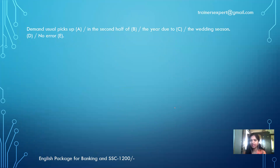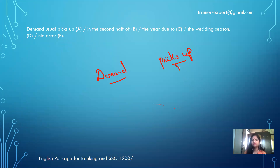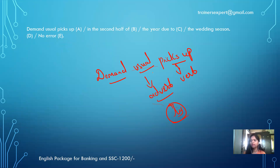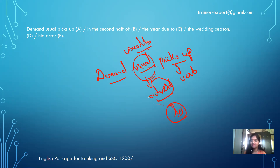Next question: 'Demand usually picks up in the second half of the year due to the wedding season.' Let me discuss the parts of speech here. 'Demand' is a noun, 'picks up' is a verb. Before that, 'usual' is used — but to describe a verb, we need an adverb. Adverbs mostly end with '-ly.' 'Usual' alone acts like an adjective; it is not an adverb. So instead of 'usual,' it should be 'usually.' 'Demand usually picks up' is correct.